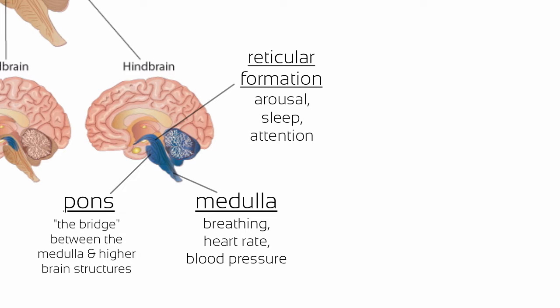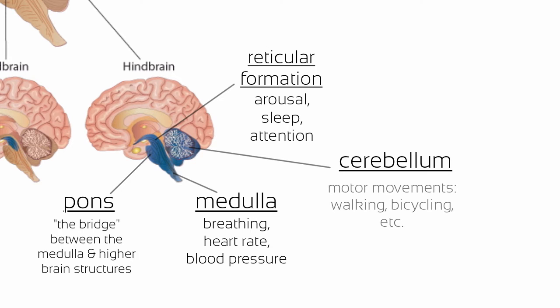The last hindbrain structure is the cerebellum. It looks a little like a cauliflower and is located behind the brain stem that connects the brain to the spinal cord. The cerebellum is essential for coordinating motor movements such as walking or riding a bike. Damage to the cerebellum could impair motor coordination, so that something as simple as walking could become difficult.